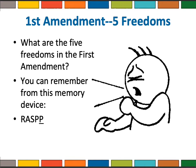Think about 'raspy,' like a raspy cough, except in this case we have a second P at the end — so it's R-A-S-P-P. From that little mnemonic device, you can remember that the five freedoms are: R, religion; A, assembly; S, speech; P, press; and the other P, petition.